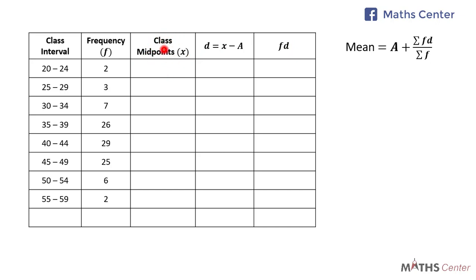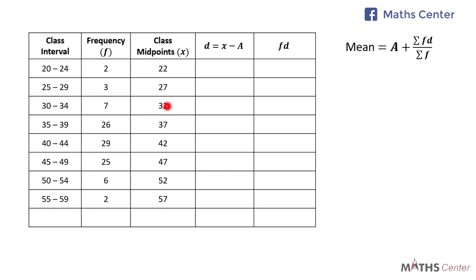Let's find the class midpoints by adding the lower class limit to the upper class limit and dividing by 2. For the first interval: 20 plus 24 divided by 2 gives 22. Then 25 plus 29 divided by 2 is 27. Then 30 plus 34 divided by 2 is 32. Then 37, 42, 47, 52, and finally 55 plus 59 divided by 2 gives 57. So we now have all the class midpoints — the x values.